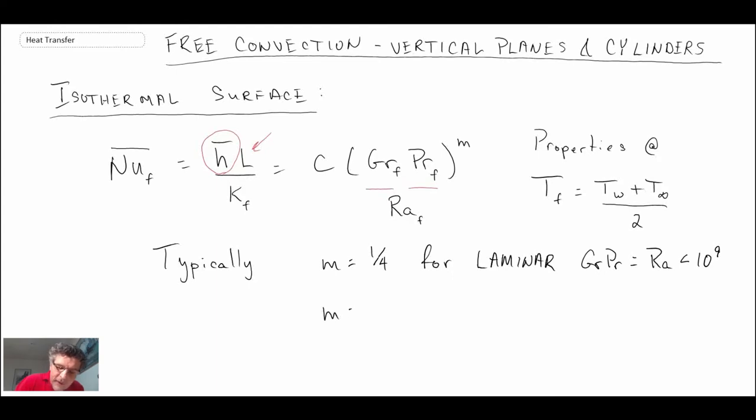If you have a turbulent boundary layer, typically m would be on the order of one-third. You may find correlations using the same sort of relationship but m does not meet that one quarter or one-third for laminar or turbulent boundary layers. Just be aware that this is typically the case, but sometimes there'll be correlations that don't exactly match up to this. For turbulent, the Rayleigh number would be greater than approximately 10 to the 9.